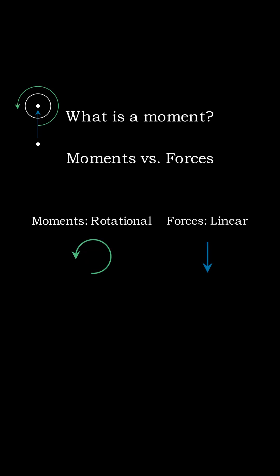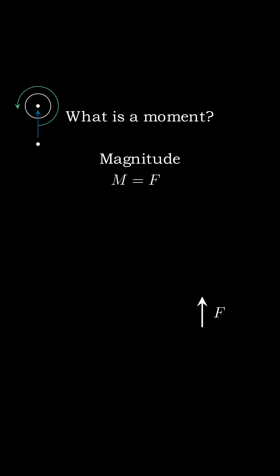Like forces, moments are vectors with a magnitude and direction. The magnitude of a moment is equal to the magnitude of a force multiplied by the shortest distance between the line of action of that force and a point of rotation.